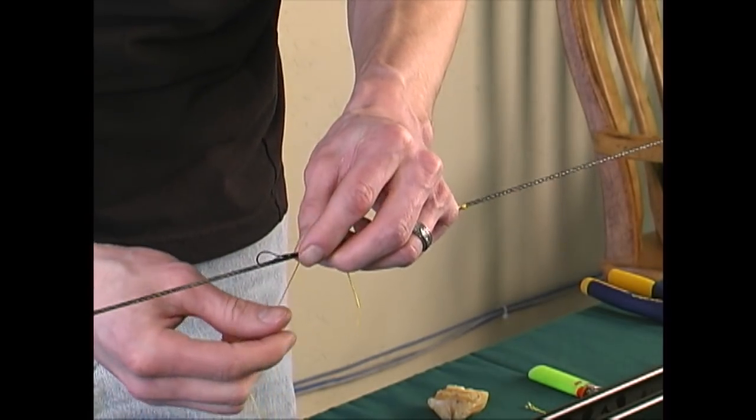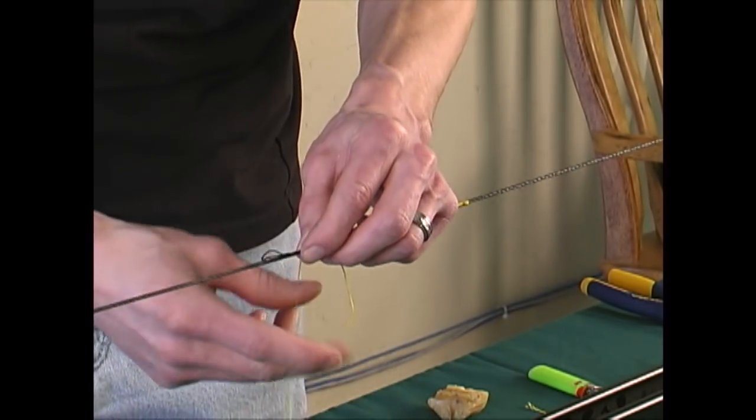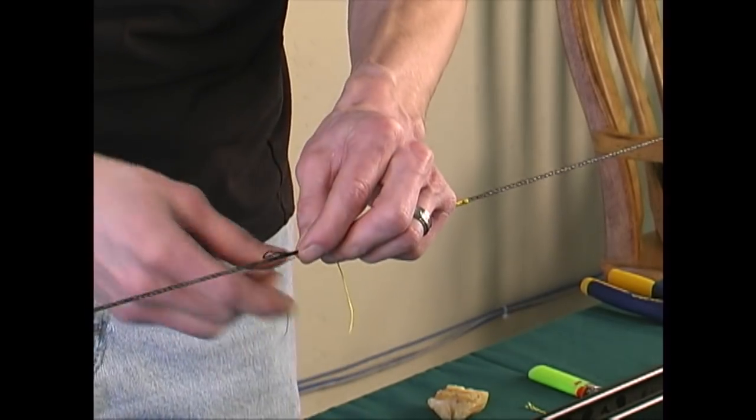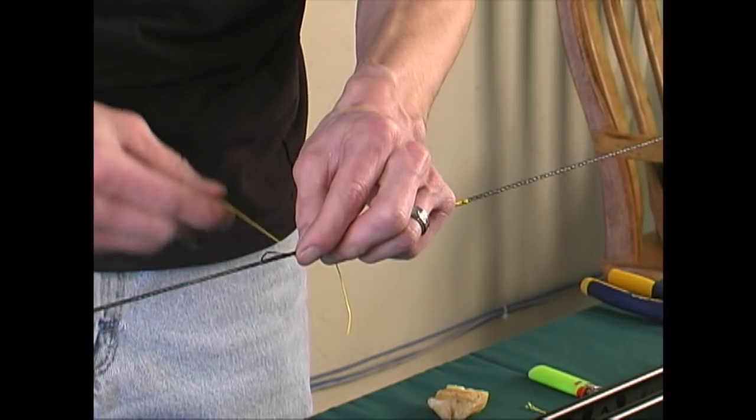Lay it against the string and start wrapping your serving material around this as you're continuing the serve. You want at least 6 to 8 rotations around the string.